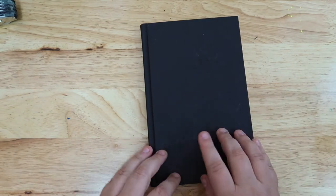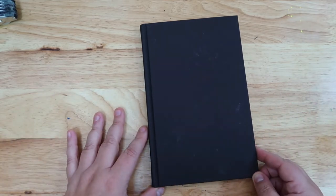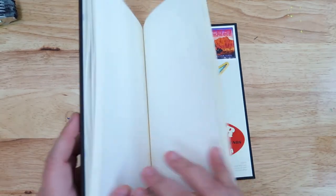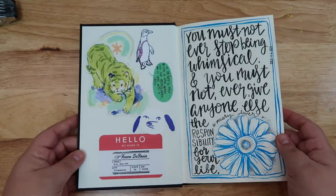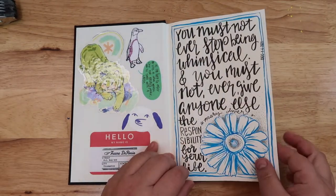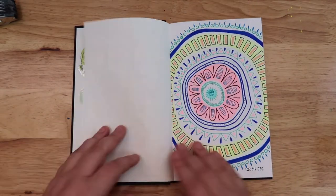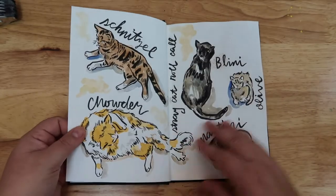Now this lovely sketchbook is a Strathmore hardcover mixed media art journal, five and a half by eight and a half. The pages are 190 gsm, so a bit thicker than what I've been working with. I wanted to try a hardcover sketchbook just to see if I would like it. This one's theme is ink only, though I've done ink and watercolor just because the paper is better.